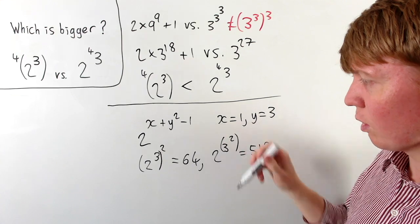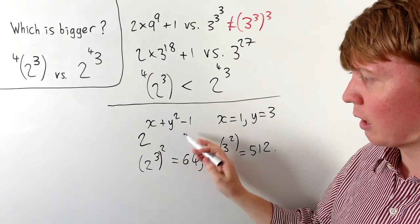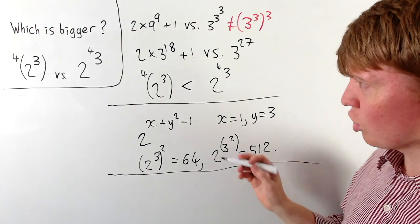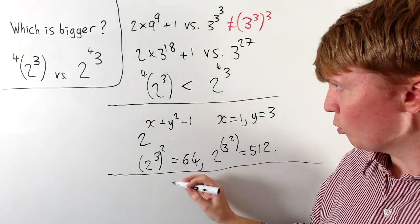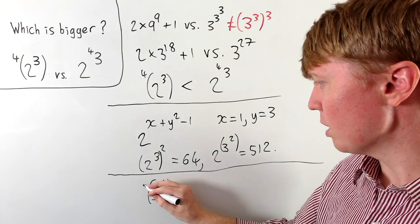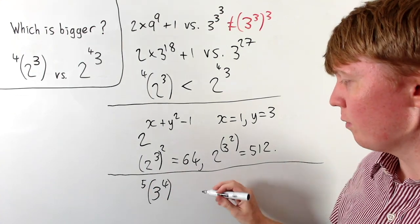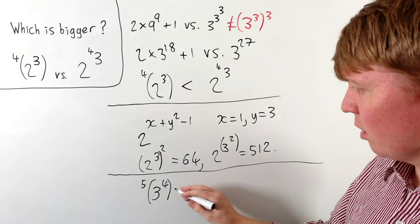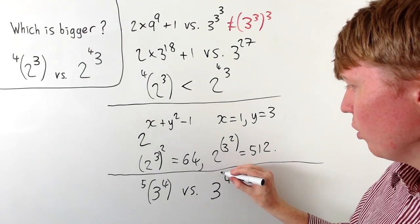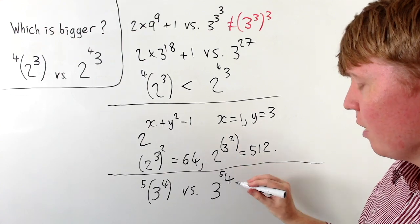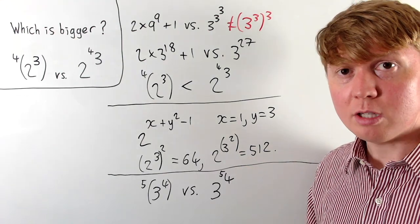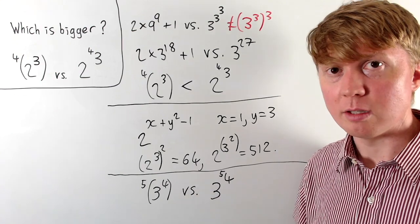If you're interested and want to challenge yourself, here's a problem to try: compare 3 to the power of 4 with a tetration of order 5 of that number, versus 3 to the power of 4 where we have a tetration of order 5 of the number 4 in the power. See if you can work out which of these two numbers is bigger.